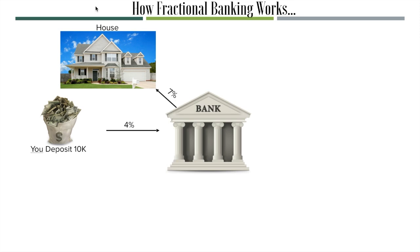The bank charges that individual seven percent, and gets their money back from that mortgage in the form of monthly payments — principal and interest — coming back every single month. Now stop and think: when you deposit money into the bank, is your deposit a liability or an asset to the bank? Many people say an asset because it's cash, but it's quite the contrary — it's actually a liability. The bank owes you that money back, plus the interest they promised you, so to them it's a liability.